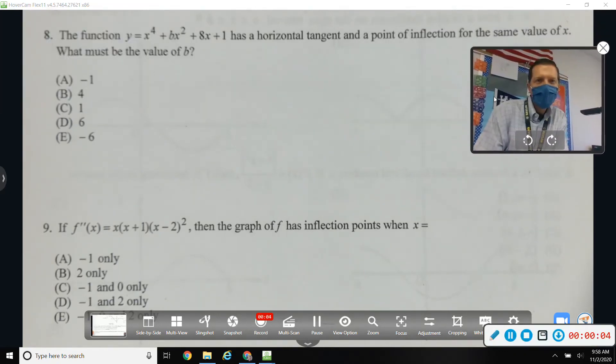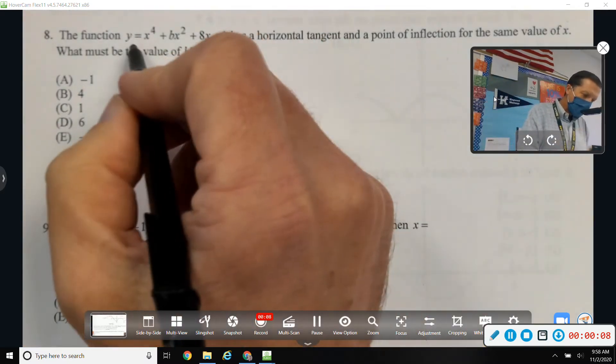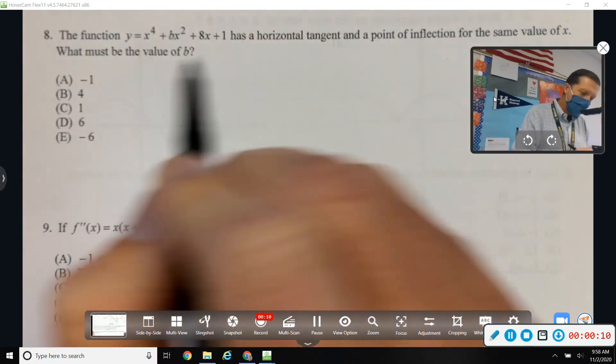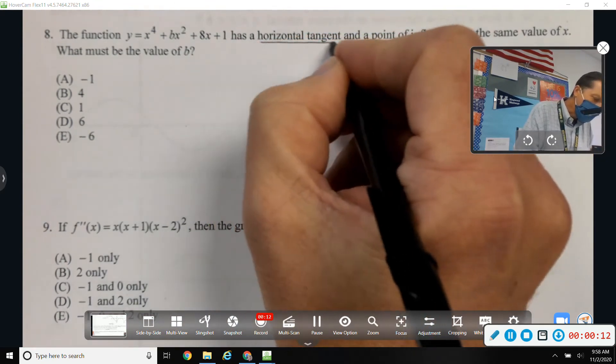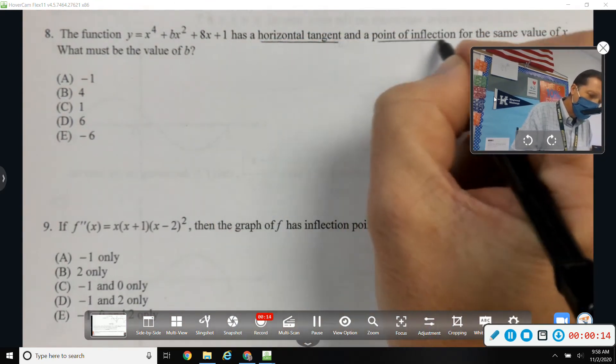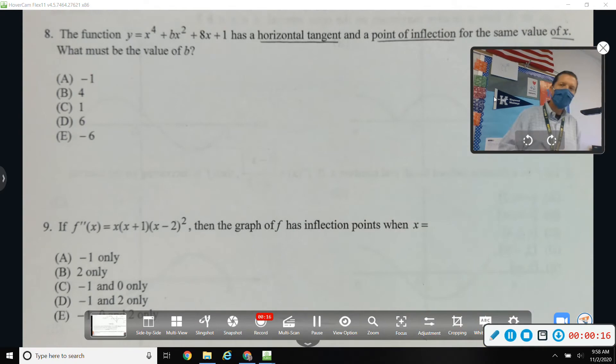Multiple choice practice, question number 8. The function y equals this ugly thing has a horizontal tangent and a point of inflection for the same value of x. What does b have to be?